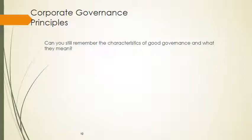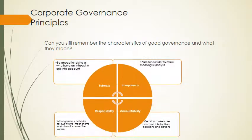Corporate governance principles - you should be able to remember these. These are the four pillars of corporate governance, especially from King 4: fairness, transparency, accountability, and responsibility. They are interlinked and go together, and they should be seen as a whole.